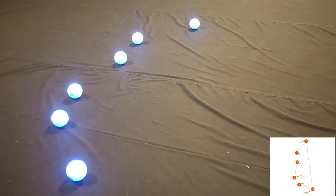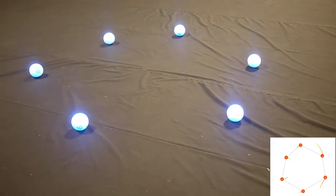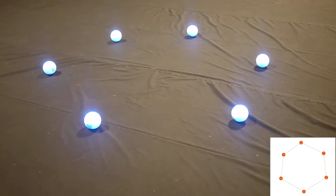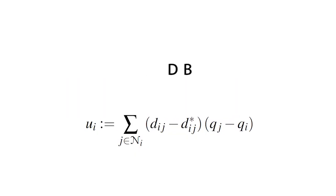We present a distributed formation control strategy for a team of agents to autonomously achieve a desired planar formation. Our control strategy is based on combining the barycentric coordinate-based and the distance-based approach.